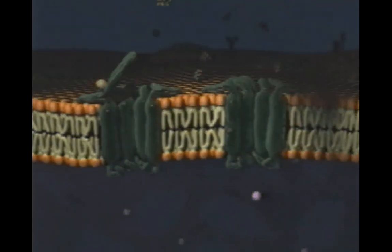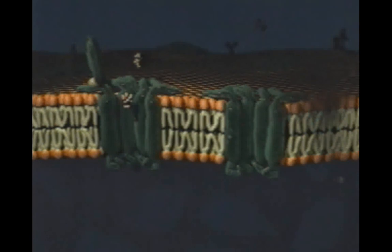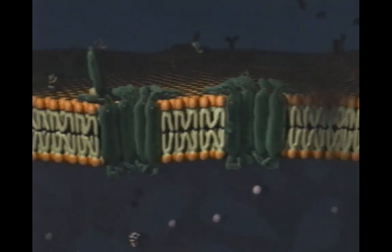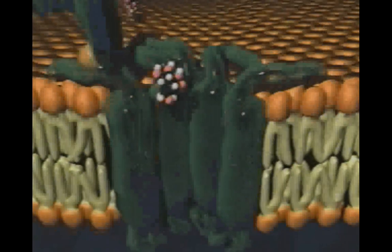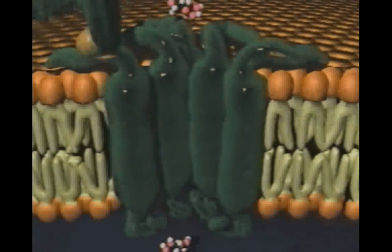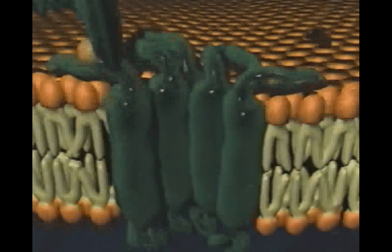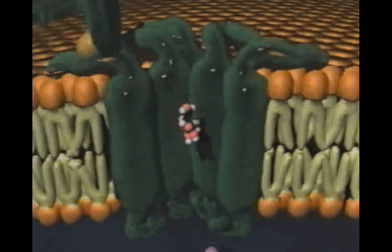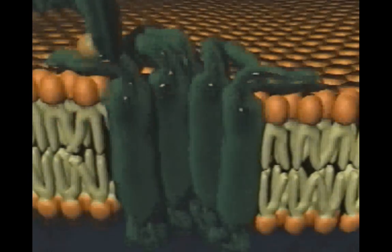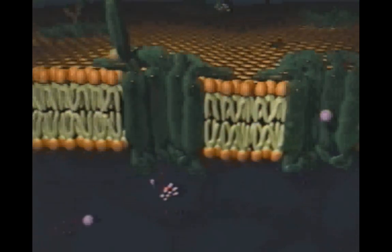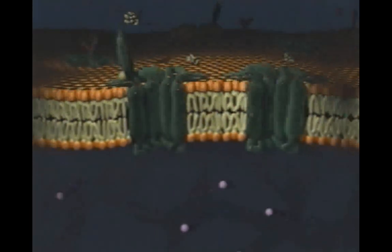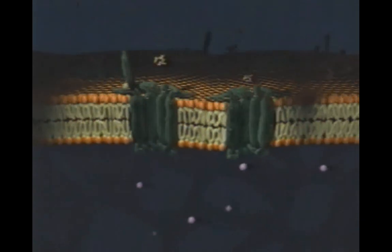Some proteins in a cell's membrane act as channels for specific ions or molecules. These channel proteins don't use energy at all. They simply allow the materials to naturally diffuse from the side with more solutes to the side with less. Whether the direction is out or in depends on where the concentration is higher for each different solute.